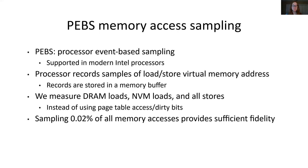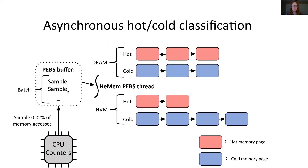HEMEM samples memory accesses with PEBS, a feature supported on modern Intel processors. PEBS stands for processor event-based sampling. With PEBS, the processor records samples of load and store virtual memory address instructions to a predefined memory buffer. We set up PEBS to measure DRAM loads, NVM loads, and all stores instead of scanning page tables for access and dirty bits. We find that sampling just 0.02% of measurements provides us enough fidelity to distinguish frequently accessed data from infrequently accessed data. HEMEM uses PEBS to classify data as hot or cold using hot or cold page lists for both DRAM and NVM. The CPU counters write PEBS samples to a buffer, which a dedicated HEMEM PEBS thread reads from. The PEBS thread asynchronously accesses these samples in a batch to make inferences about application access patterns without having to scan page tables or shoot down the TLB.